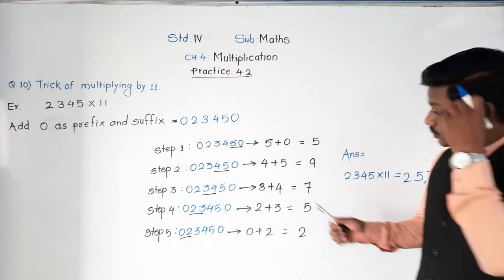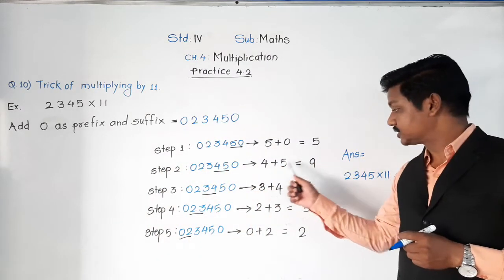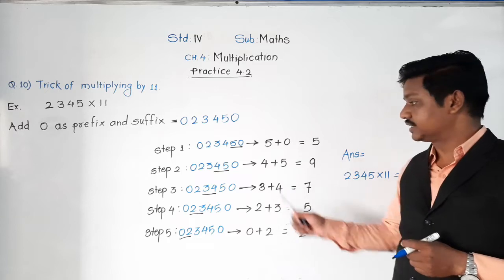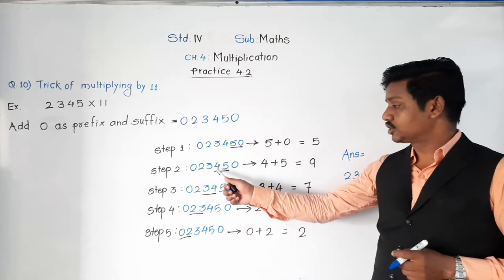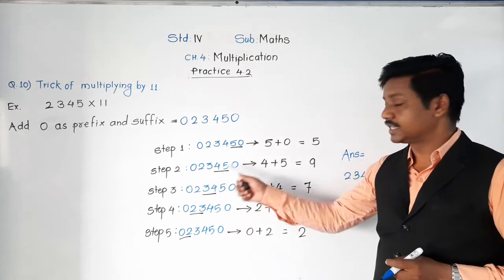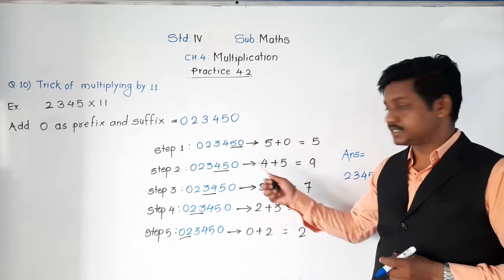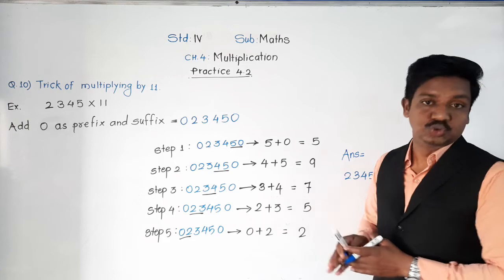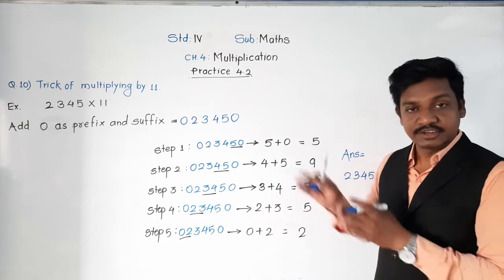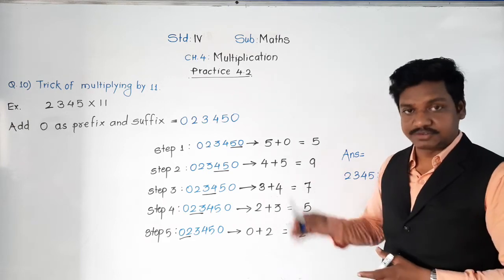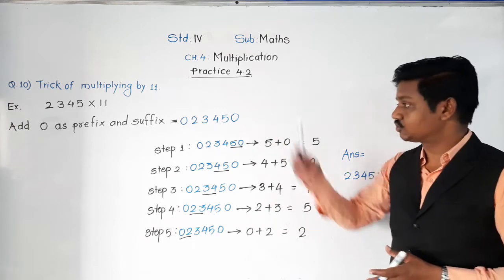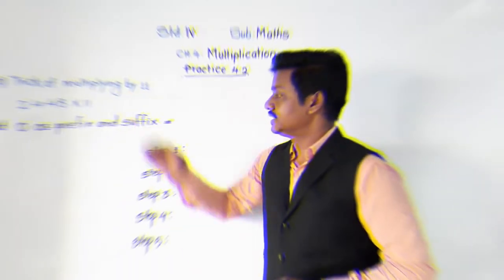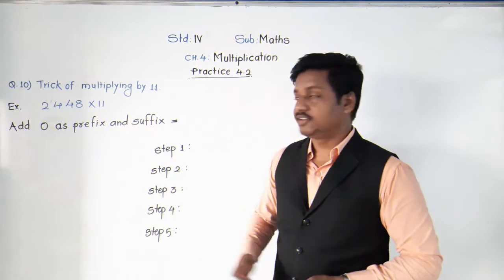Now, what if there is a carry-over? For example, you had four plus five giving nine, but suppose you get seven plus eight — that equals fifteen. Then you write 5 and carry 1 to the next digit. Pause and practice before we move to the next example.